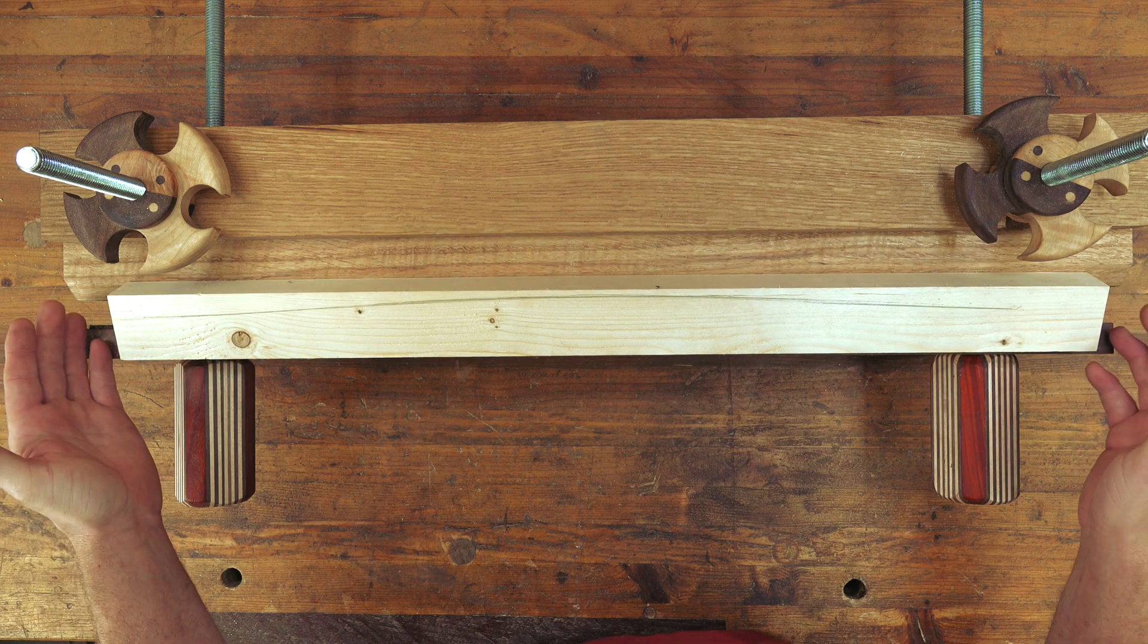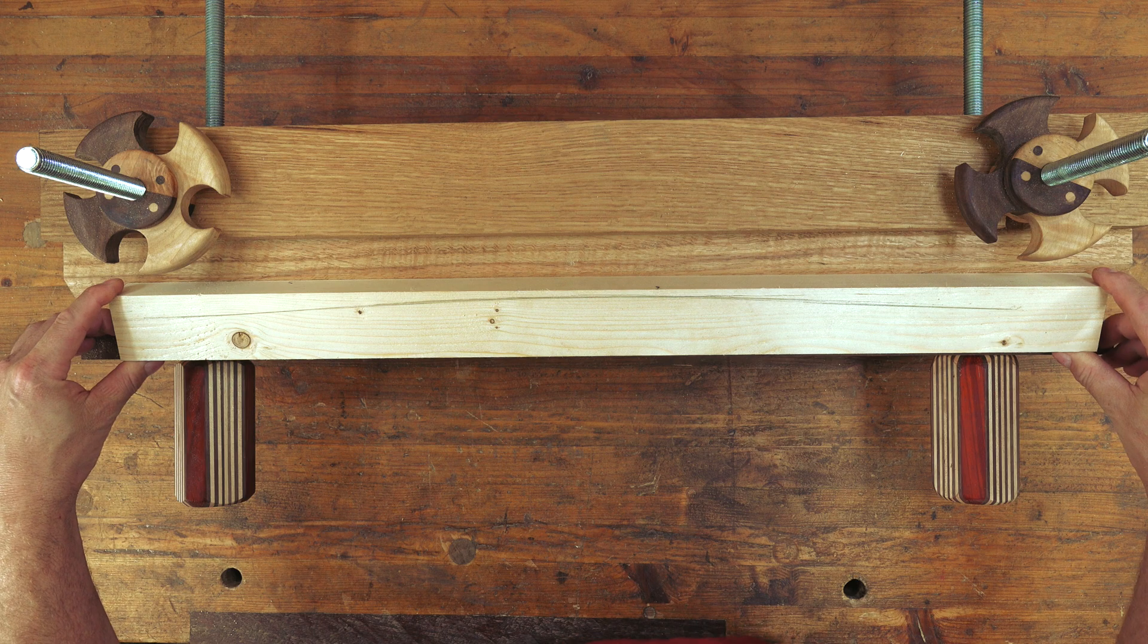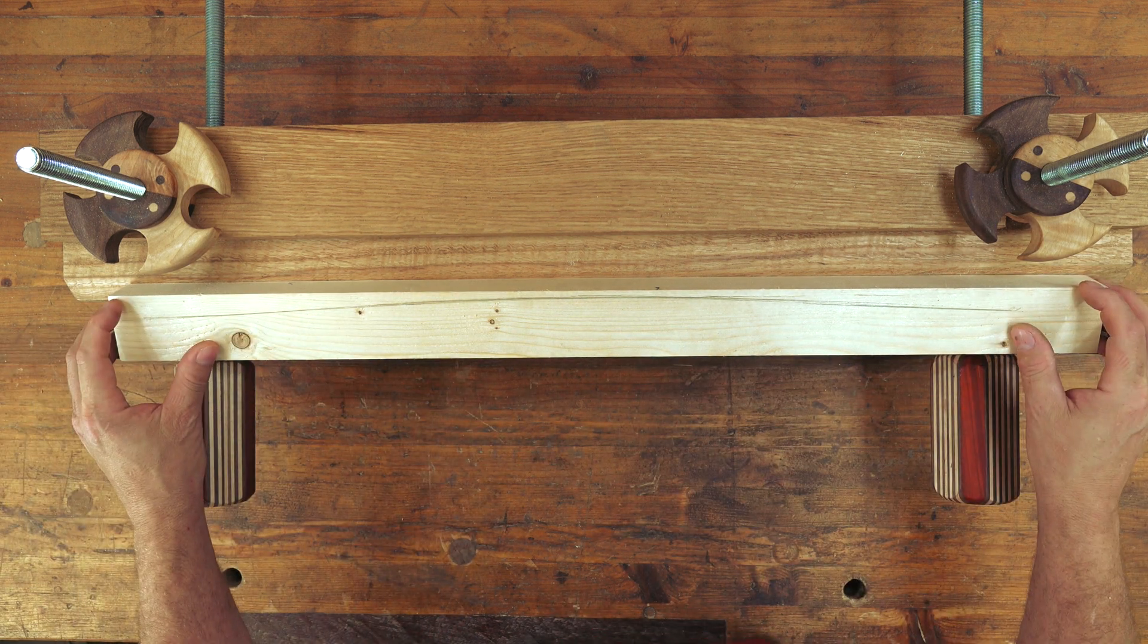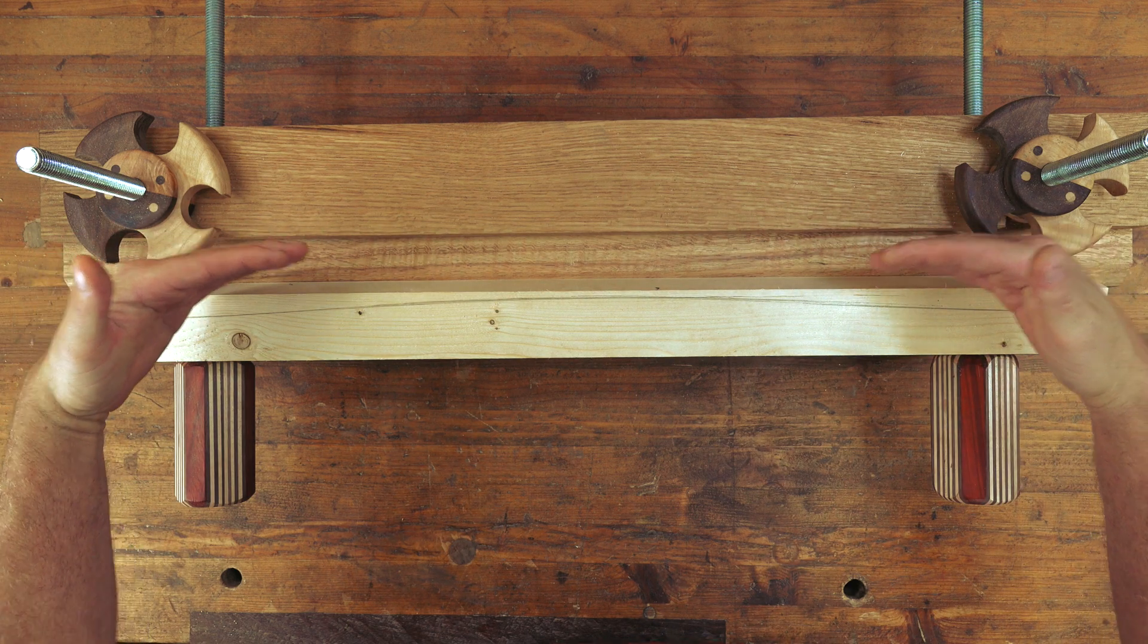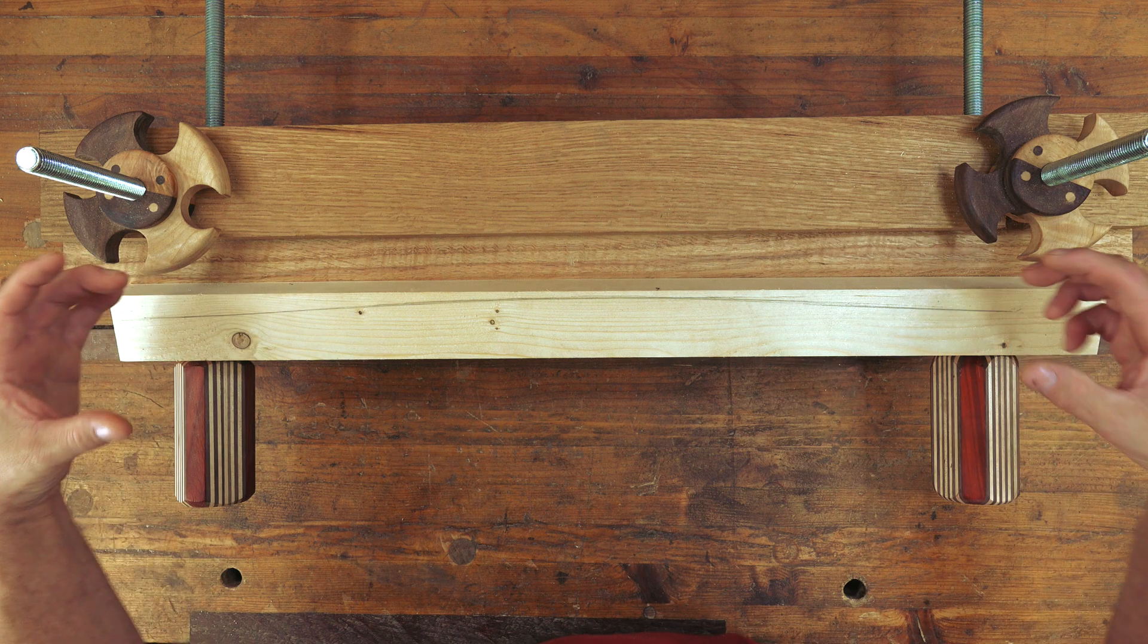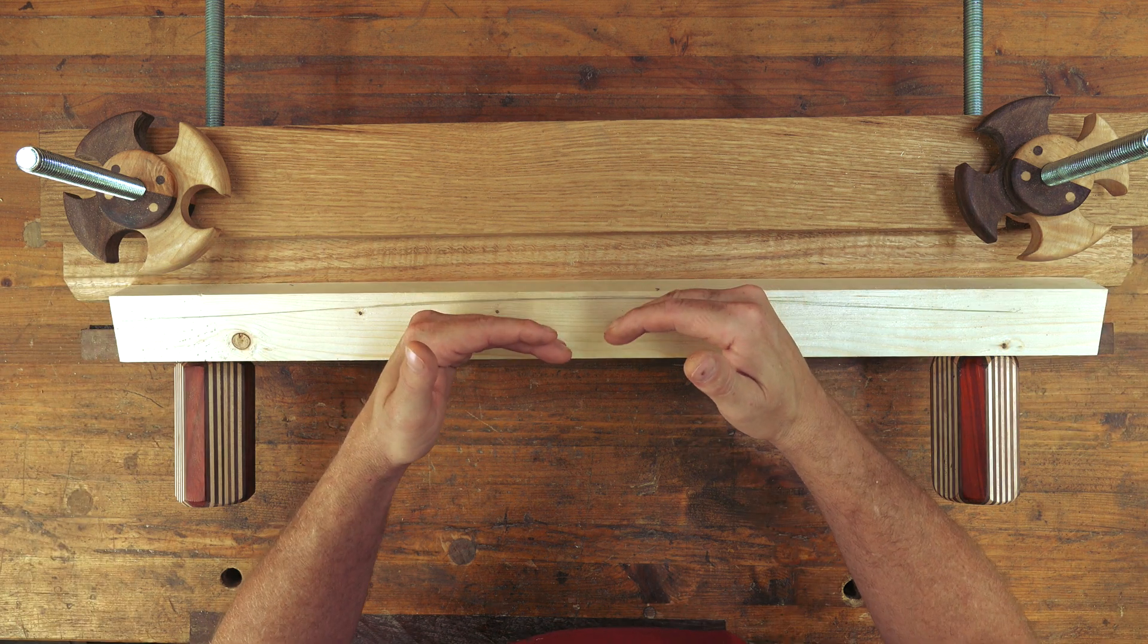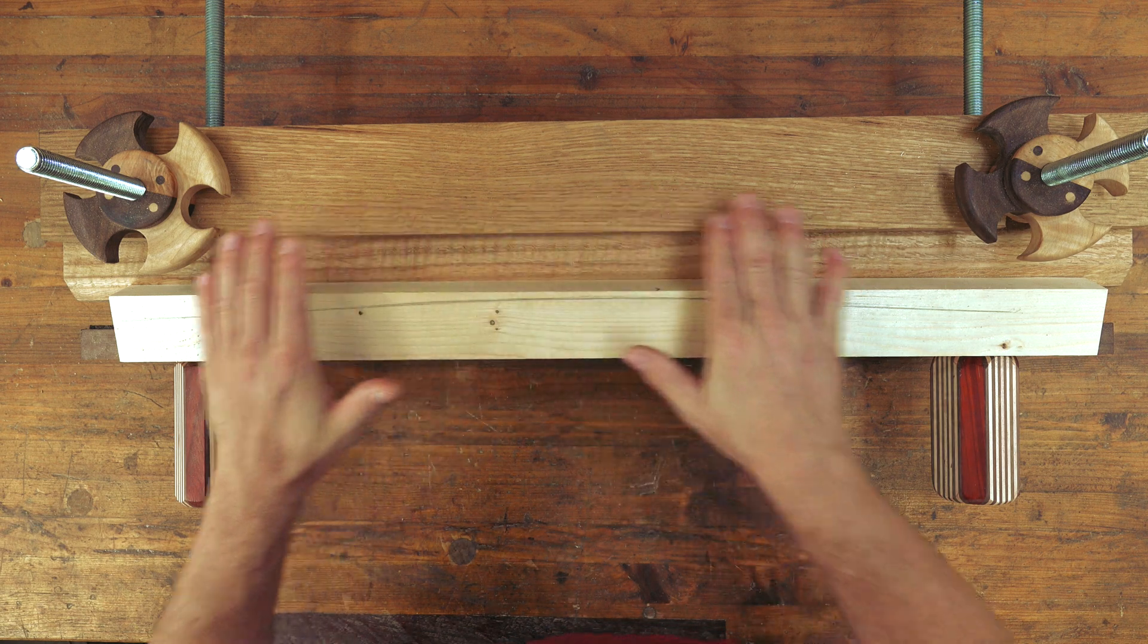A caul is basically a piece of stock that has a wider center than the edges. The reason you want this when you're doing some kind of glue up is if you have a panel and want to get pressure in the center. We can always clamp on the sides, but usually if we just put a couple clamps on the edge, it actually kind of lifts the center up, which is obviously not what we want if we're trying to get an even glue up.